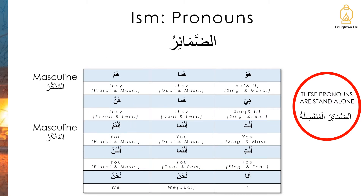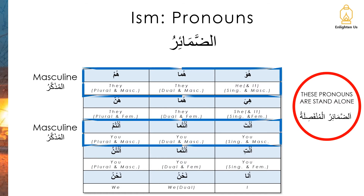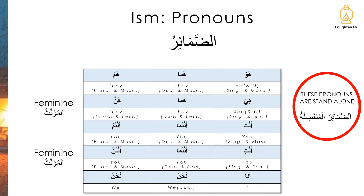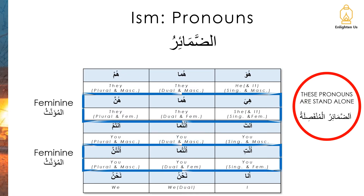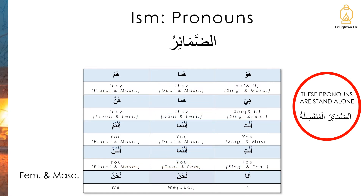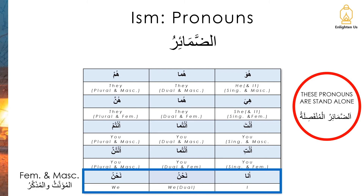There's a further separation in terms of gender. The first and third rows are for the masculine, and the second and fourth are for the feminine. And as many of you noticed, for the first person — the last row — whether it's feminine or masculine, whether it's female or male, we use the same pronouns.